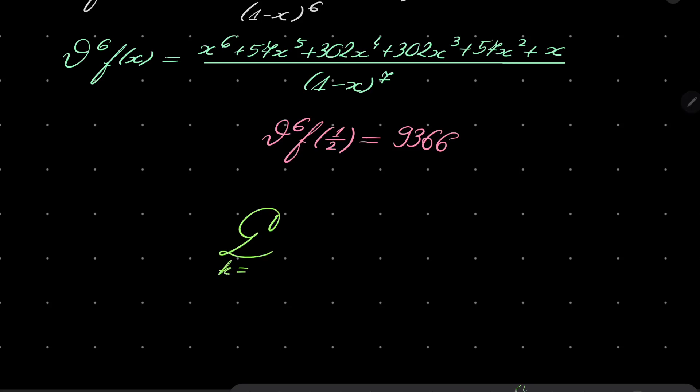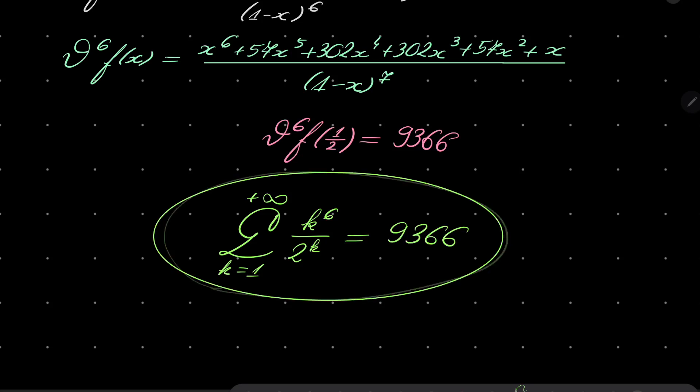Our series k to the power of six over two to the power of k converges to 9366, and that closes our problem.